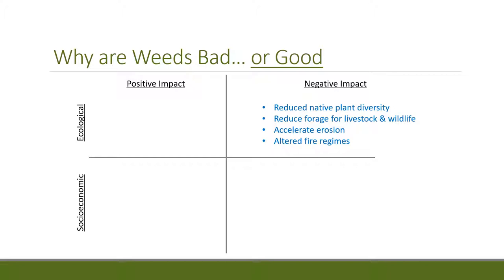When invasive species come in, they reduce native plant diversity and usually reduce forage for livestock and wildlife. They often accelerate erosion — especially annuals such as cheatgrass and yellow star thistle — by reducing soil cover. They also alter fire regimes, as with cheatgrass, leading to much more frequent fires. On the other hand, some weeds are good forage and provide good coverage. Leafy spurge, although bad for cattle, is quite good forage for sheep and goats. Reed canary grass provides erosion protection.